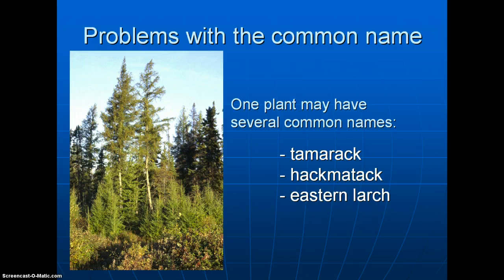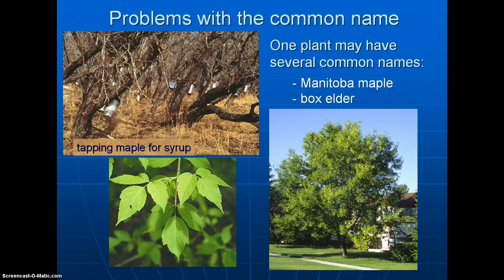For example, the plant Larix laricina is known by several common names in different parts of Canada. I learned it as tamarack, living in the prairie region. If you live in Newfoundland, apparently it's known as hackmatack, and often in eastern Canada it's known as eastern larch. So you can see where confusion can come about.